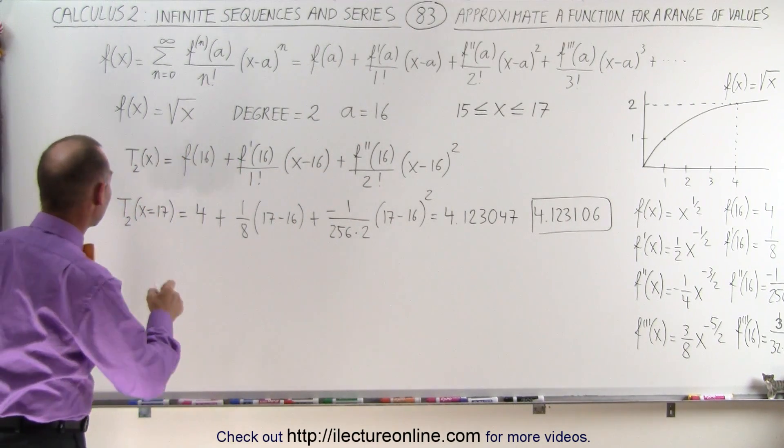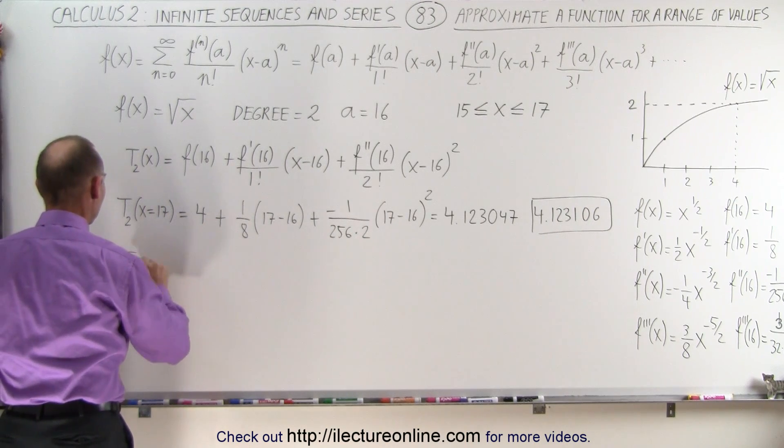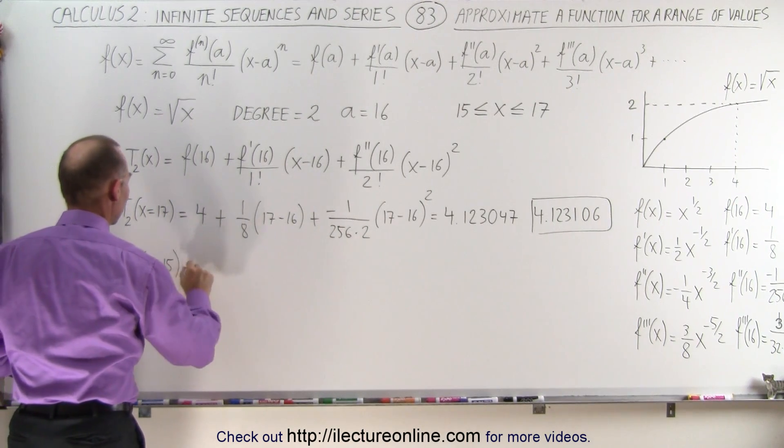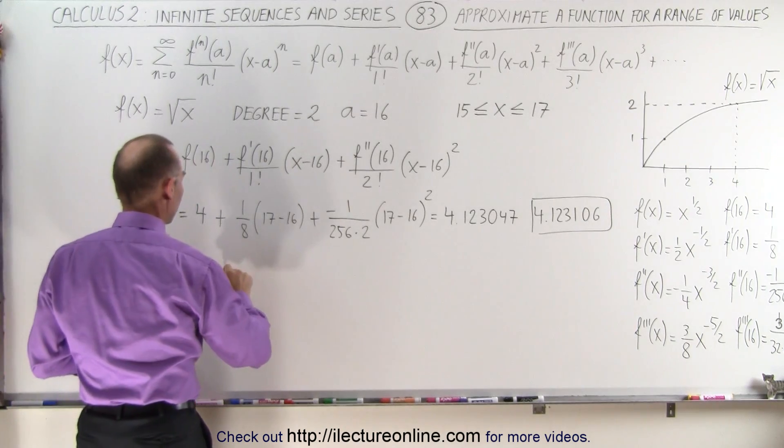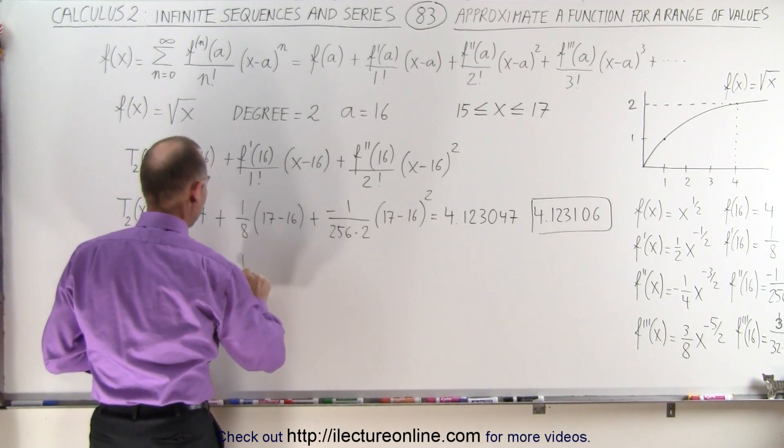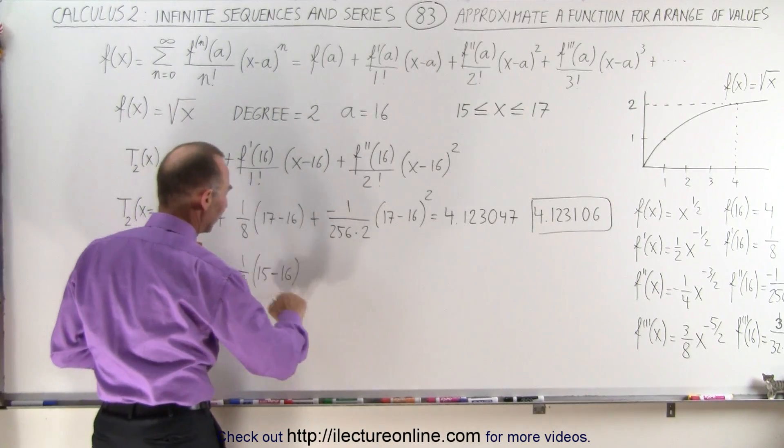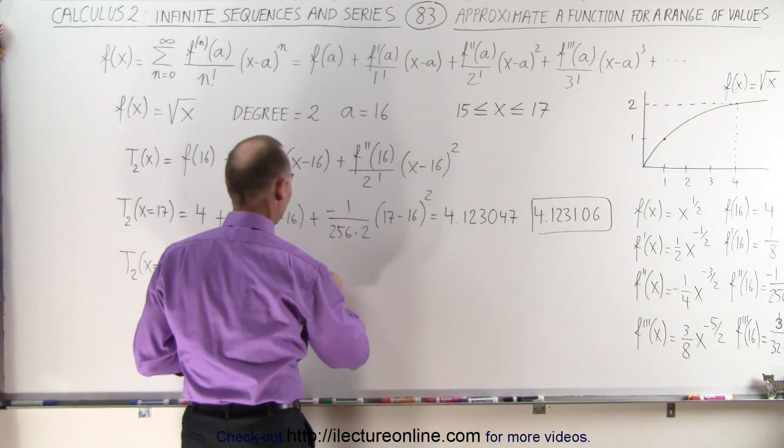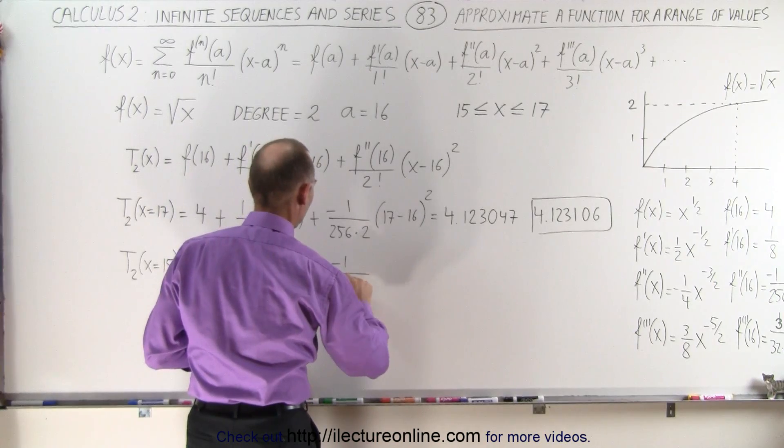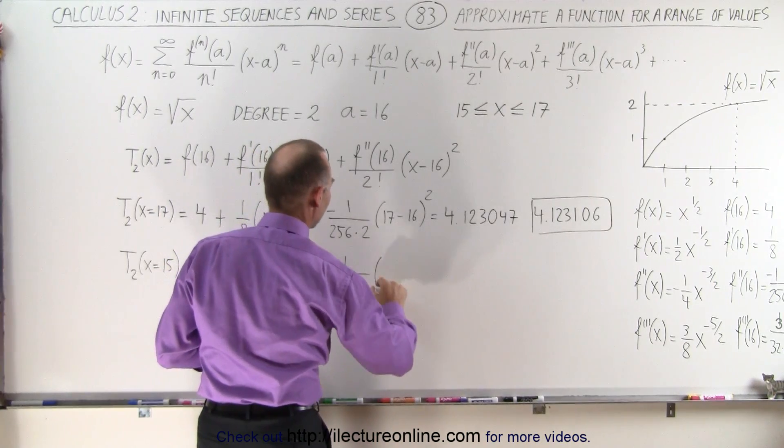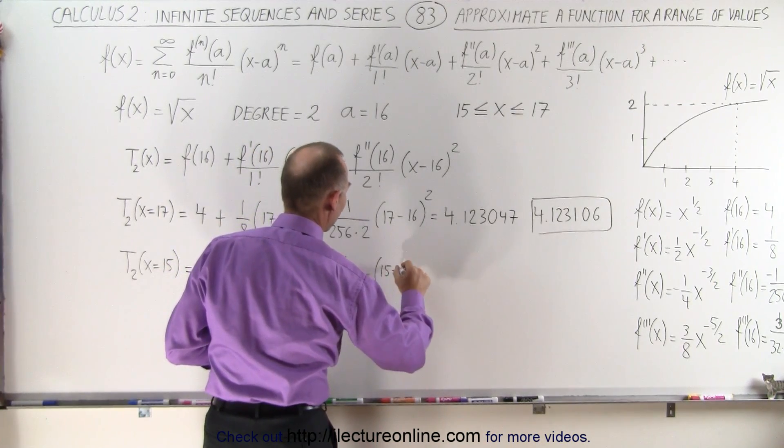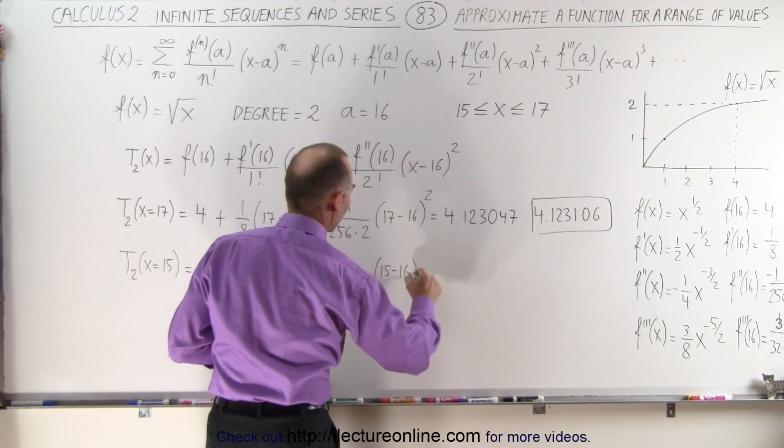Now let's do the other side. The evaluation of the function when x equals 15, so that's equal to 4, plus 1 over 8 times (15 minus 16). Well, that will make this a negative. And then here we have plus a negative 1 over 512 times (15 minus 16) squared.